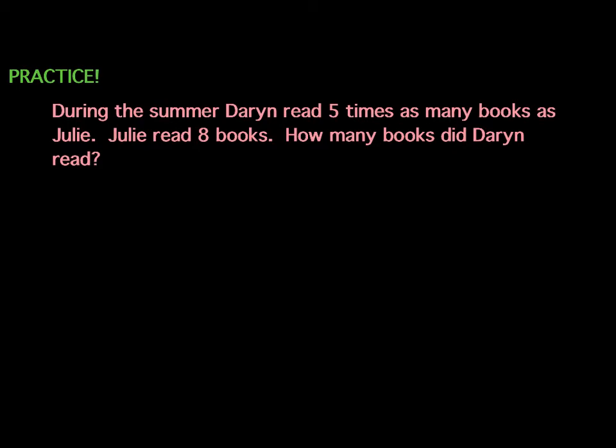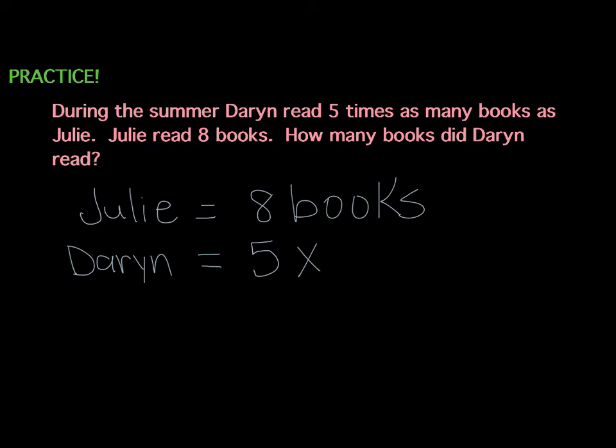Now we know exactly how many books Julie read, because it tells us Julie read eight books. So I could say that Julie equals eight books. And then we look at Darren, and it states that he read five times what Julie read. So Darren is going to equal five times eight. So that means he read five times eight. Looking at that in that fashion, how many books did Darren read? He read 40 books.